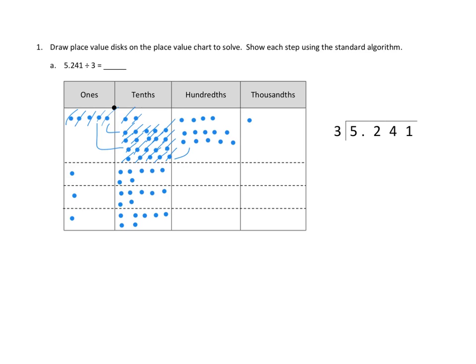We can now move to our hundredths. We've got ten here that we decomposed, plus four more, so that's fourteen hundredths to divide across three different groups. We can only divide twelve of them, putting four in each group. Twelve hundredths account for all but two of our fourteen hundredths.